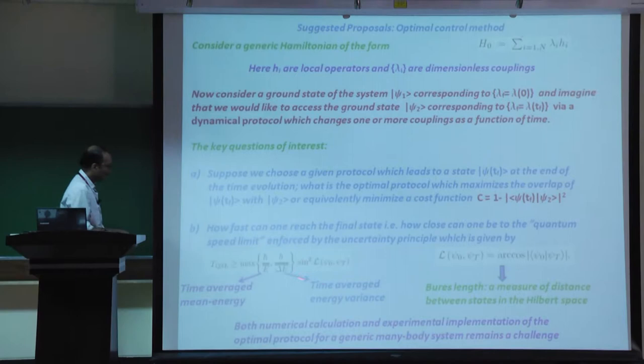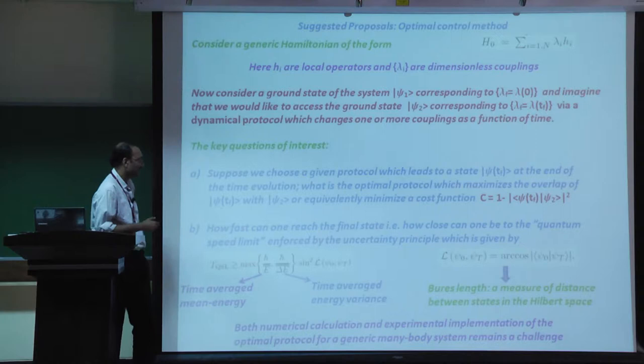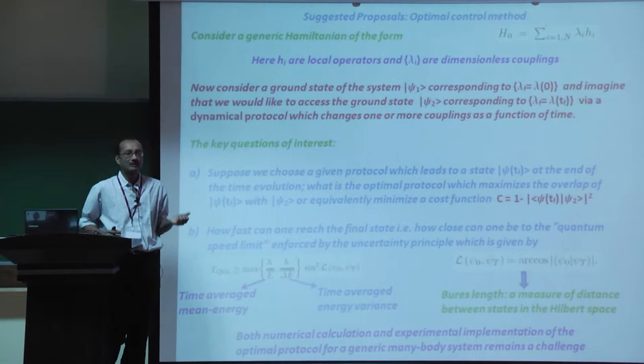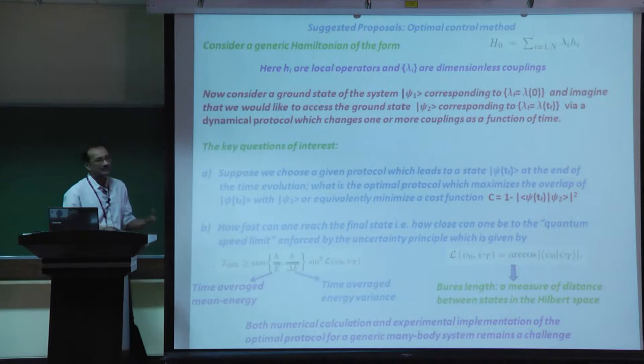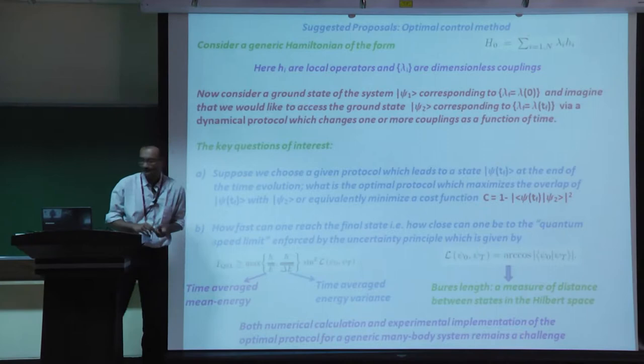Both optimal control protocols and approaching the quantum speed limit are theoretically interesting, but numerical calculation and experimental implementation of the optimal protocol for a generic many-body system remains a challenge. Convergence of the optimization procedure is another issue and is not always guaranteed.